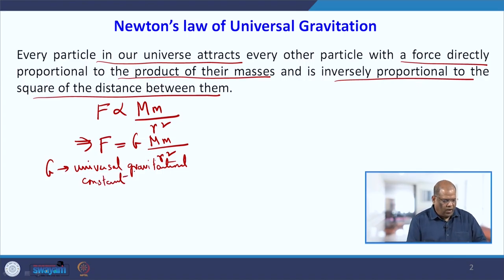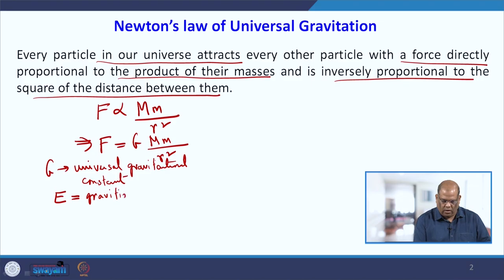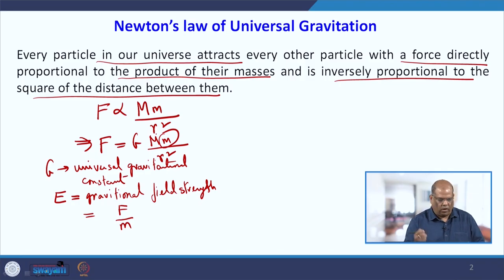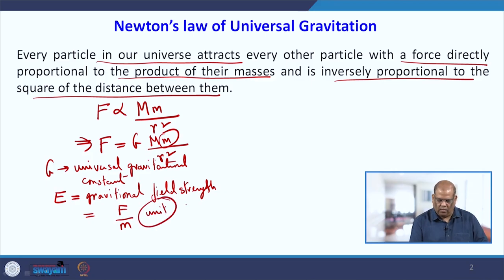We define another term called E, the gravitational field strength, which is defined by F divided by m, where m is the mass of the smaller object. If we want to see the unit of this, force has the unit Newton and mass is kg.